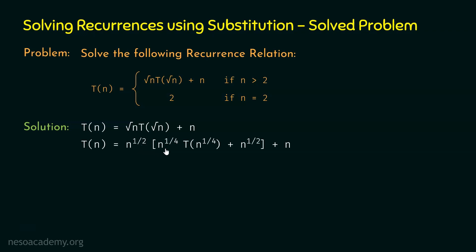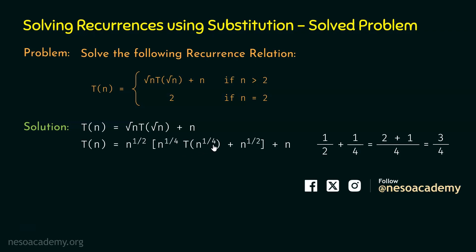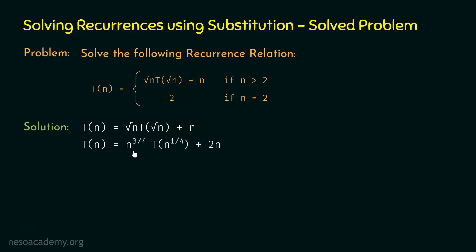When the bases are the same, the powers add. So n^(1/2) · n^(1/4) = n^(3/4), since 1/2 + 1/4 = 3/4. We get n^(3/4) · T(n^(1/4)). Then n^(1/2) · n^(1/2) = n^1 = n, since 1/2 + 1/2 = 1. We have n + n = 2n. So this expression equals n^(3/4) · T(n^(1/4)) + 2n.